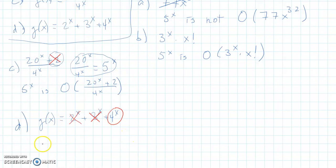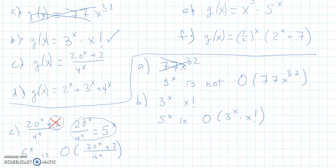That tells us that 5 to the x is not big O of 2 to the x plus 3 to the x plus 4 to the x. Again, since they're all added together, we only look at the largest one. And 5x is bigger than 4 to the x. So that one is out. So going back up to my list, this one checks out. This one doesn't work.